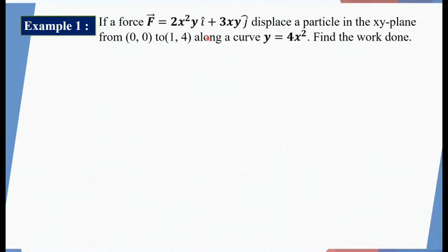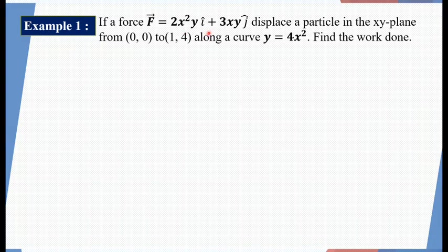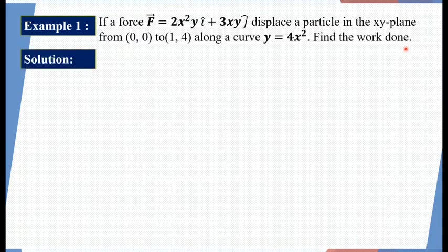Example 1: If a force vector F equals 2x²y i plus 3xy j displaces a particle in the x-y plane from (0,0) to (1,4) along a curve y equals 4x², find the work done.